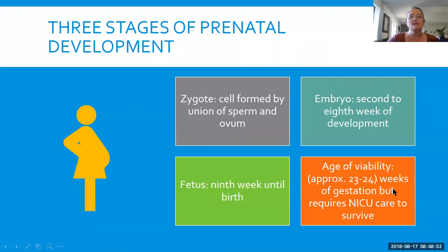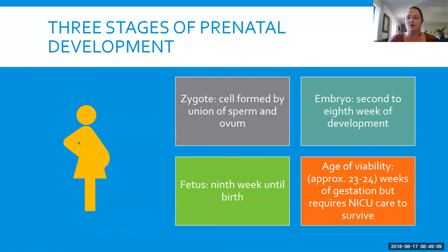There are three stages of prenatal development. The zygote is when the cell is first formed. Then we have the embryo stage, which is the second to the eighth week of development — this is usually when a mother finds out she's pregnant. And then the fetus stage is from the ninth week until birth.